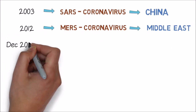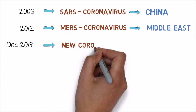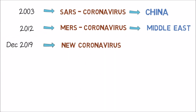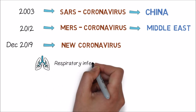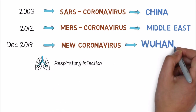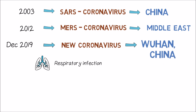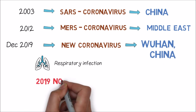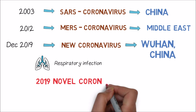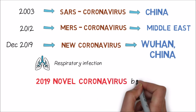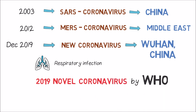Recently, in December 2019, a new coronavirus, which had not been previously identified, was found in people suffering from respiratory infection in the city of Wuhan, China. An interim name was given to this virus as 2019 novel coronavirus by the World Health Organization.